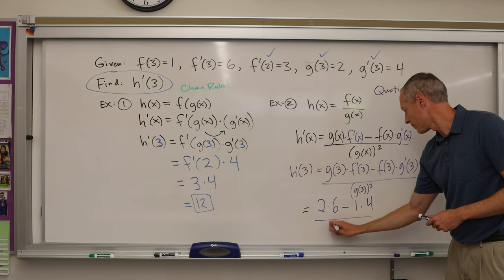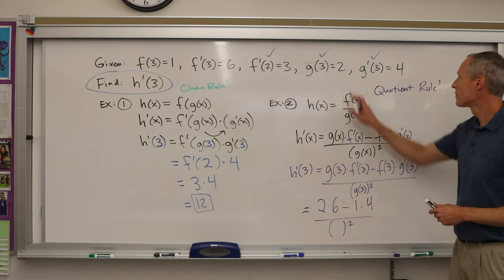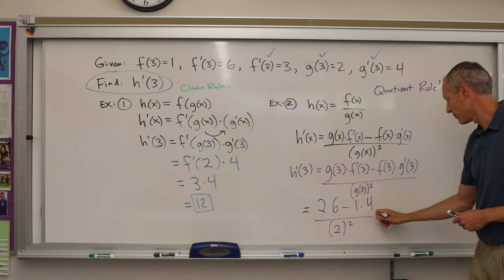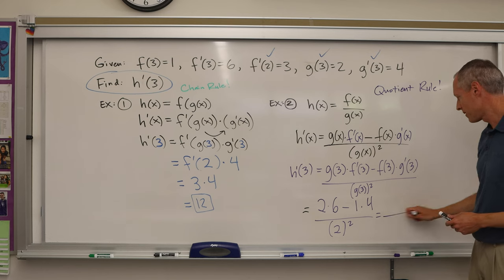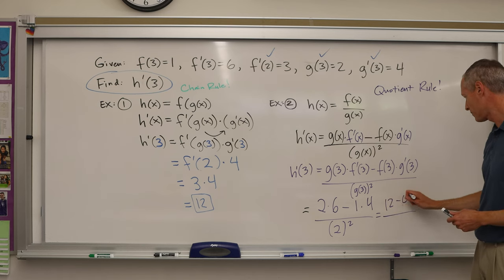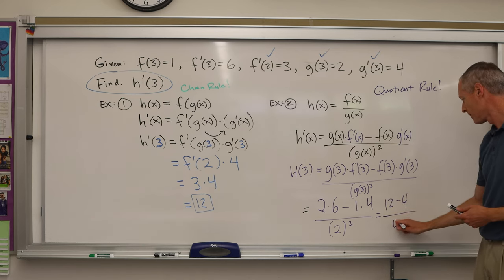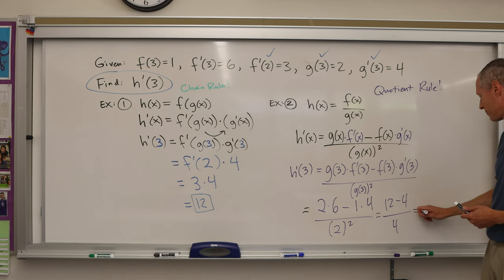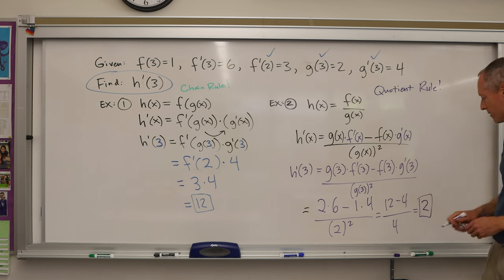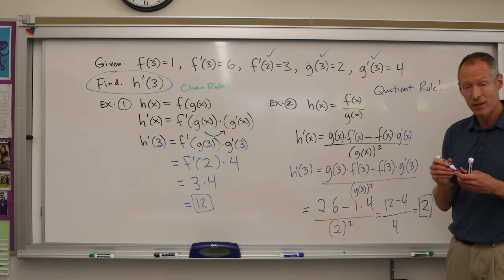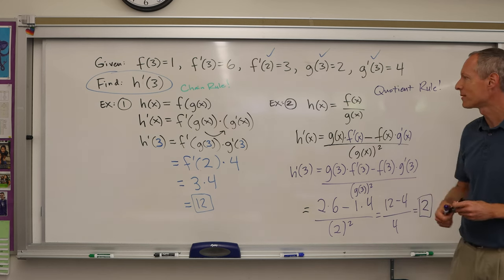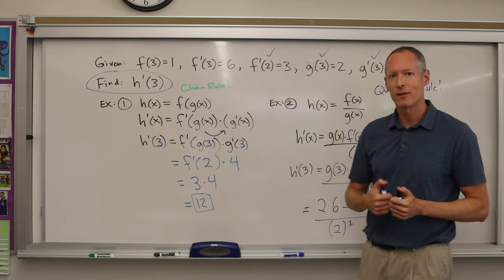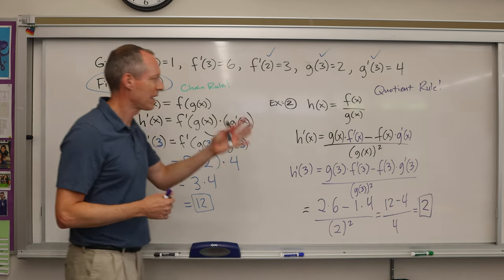So then just do the arithmetic. Here we go: it's 12 minus 4 over 2 squared is 4, and that would be 8 over 4, which is 2. And so there's your lesson of the big three derivative rules with two examples to help you out. All right, good luck with your learning of calculus.